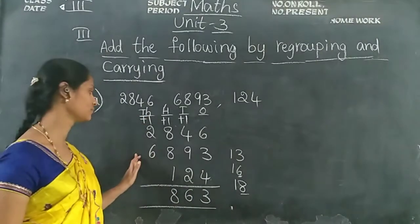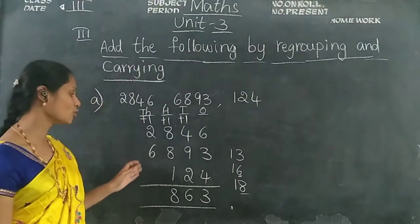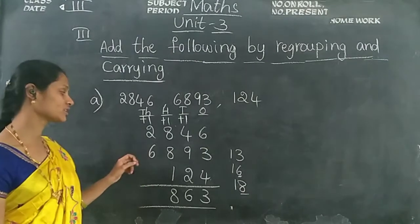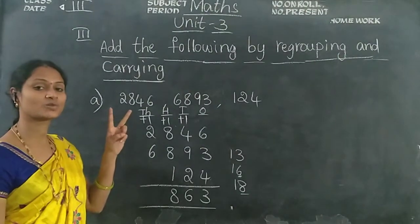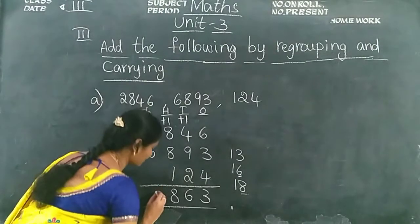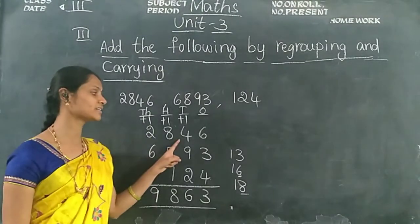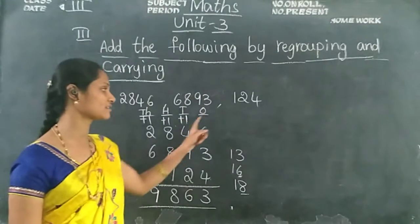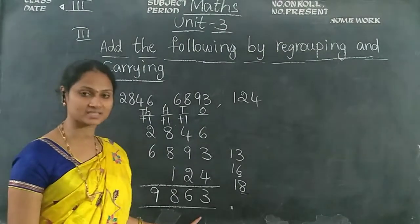Now add the thousands place. There is no thousands place in the third number, so we add only 2 digits. Keep 6 in your mind, take 2 fingers: 6 after 7, 8. Then 8 plus 1 equals 9. Write 9 in the thousands place. So 2,846 plus 6,893 plus 144 equals 9,863.